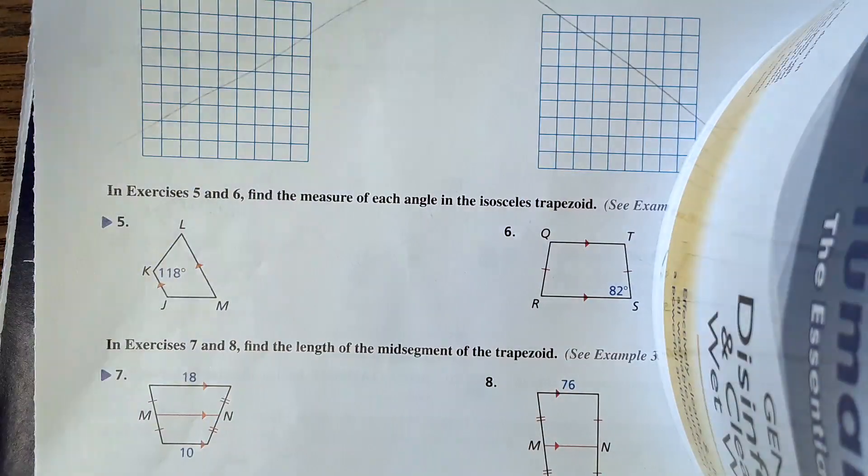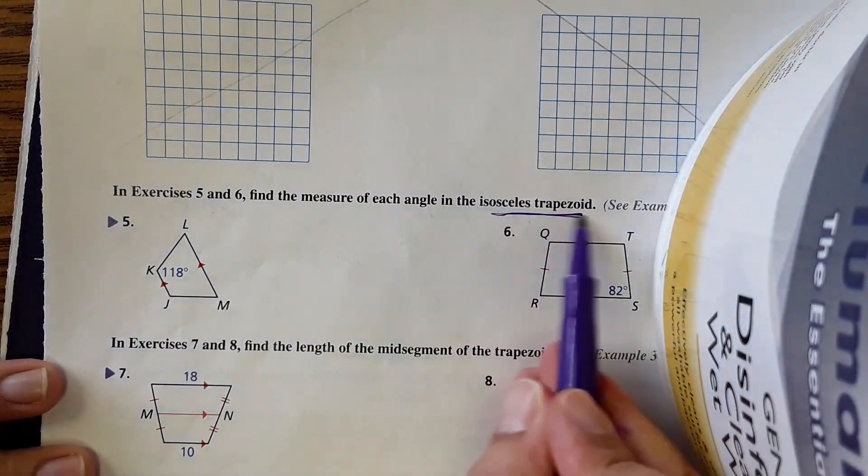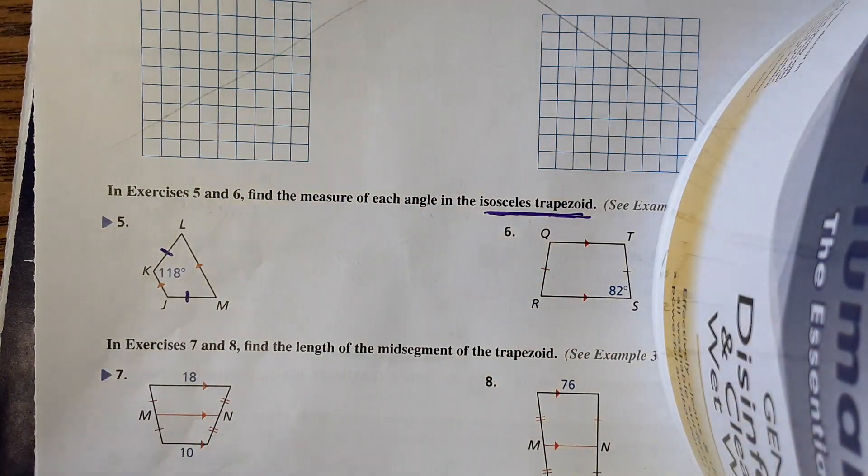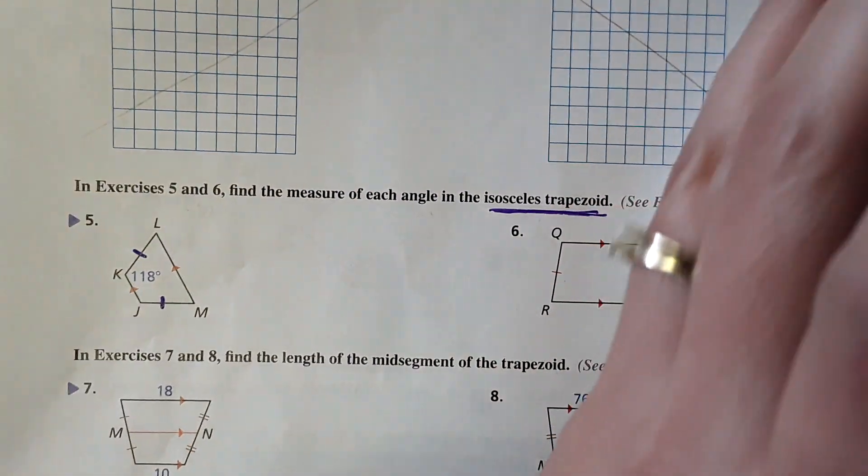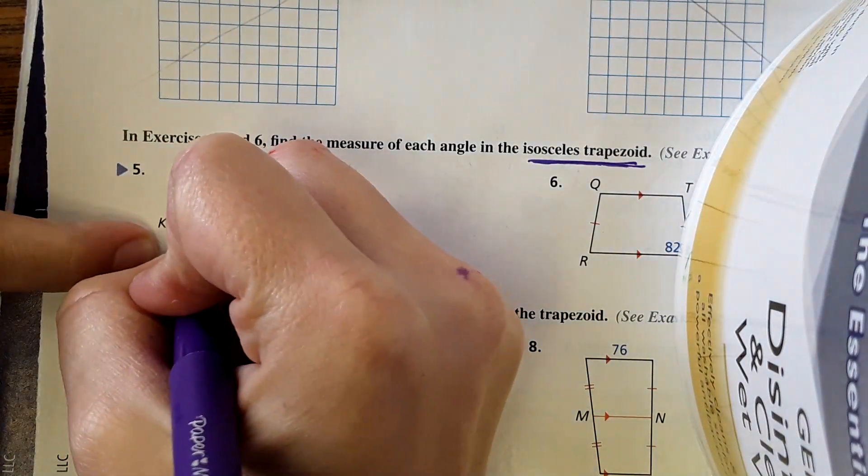Okay, so it says find the measure of each angle in the isosceles trapezoid. They specifically say it's an isosceles trapezoid, so that means this is the same length as this, and in an isosceles trapezoid the base angles are congruent. So if this is 118 degrees, then this is 118 degrees.